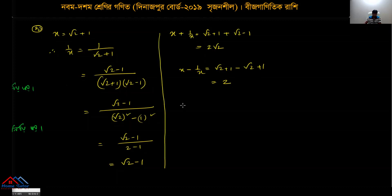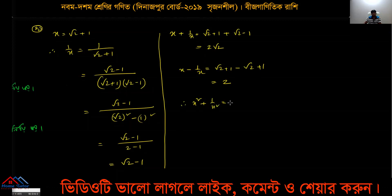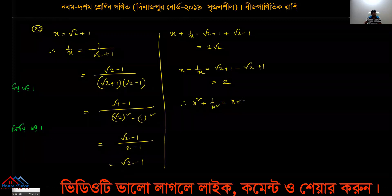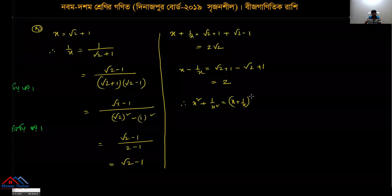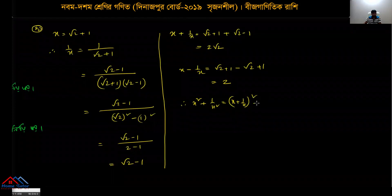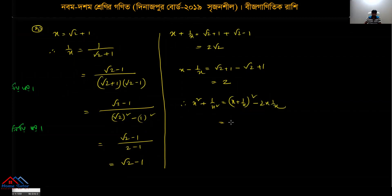Now find x² + 1/x². The formula used is (a + b)² - 2ab. With x - 1/x = 2√2, the value becomes (2√2)² = 8, so x² + 1/x² = 8 - 2 = 6.